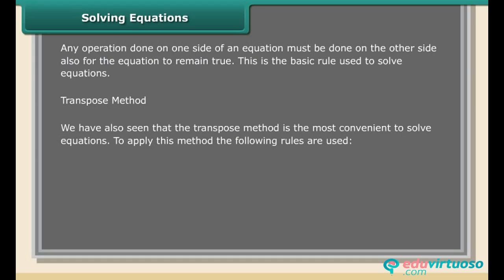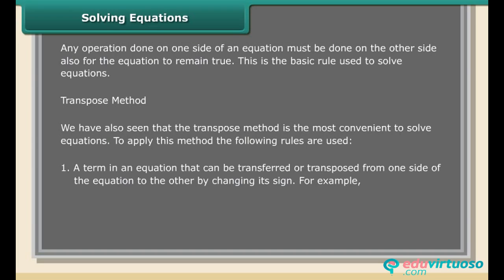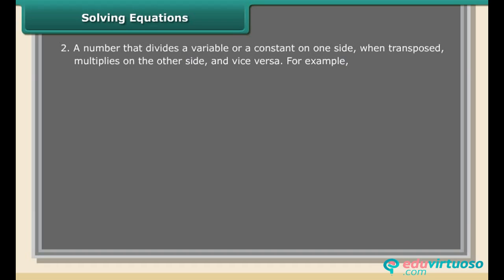To apply the transpose method, the following rules are used. Rule 1: A term in an equation can be transferred from one side to the other by changing its sign. For example, if x − 12 = 5, then x = 5 + 12; if x + 1 = −2x, then x + 2x = −1. Rule 2: A number that divides a variable or constant on one side, when transposed, multiplies on the other side and vice versa. For example, x/5 = 10 becomes x = 10 × 5 = 50; 5x = 10 becomes x = 10/5 = 2.